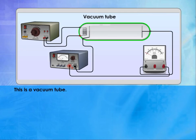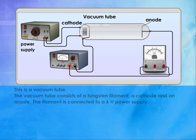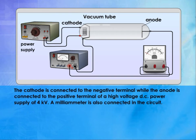This is a vacuum tube. The vacuum tube consists of a tungsten filament, a cathode and an anode. The filament is connected to a 6V power supply. The cathode is connected to the negative terminal while the anode is connected to the positive terminal of a high voltage DC power supply of 4KV. A milliammeter is also connected in the circuit.